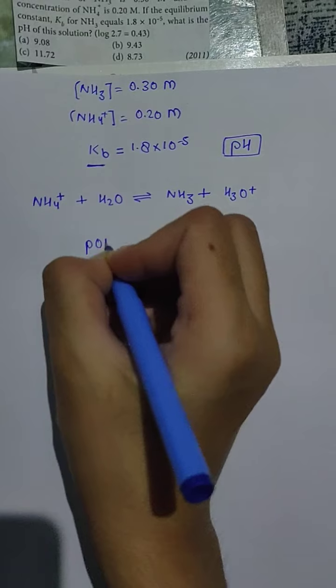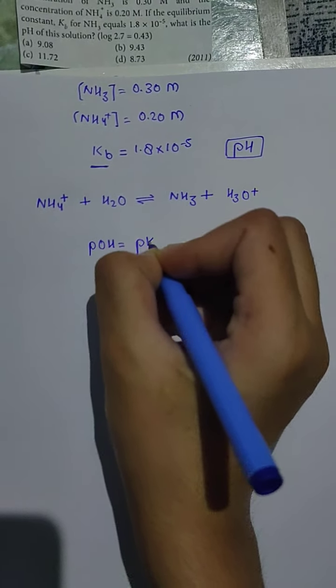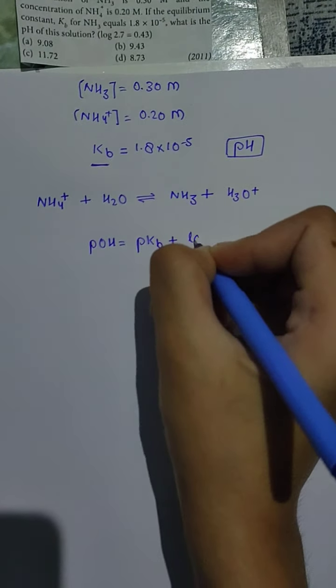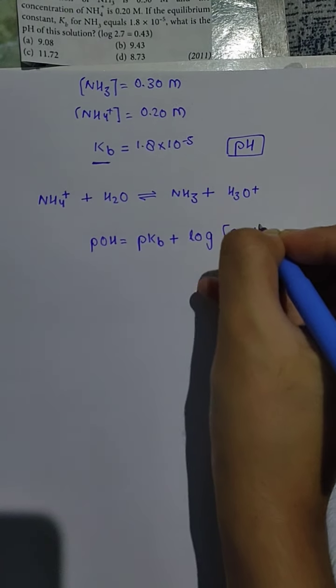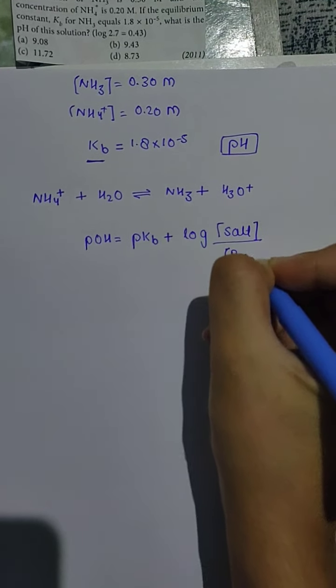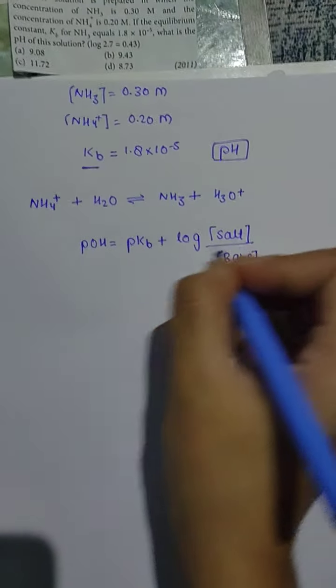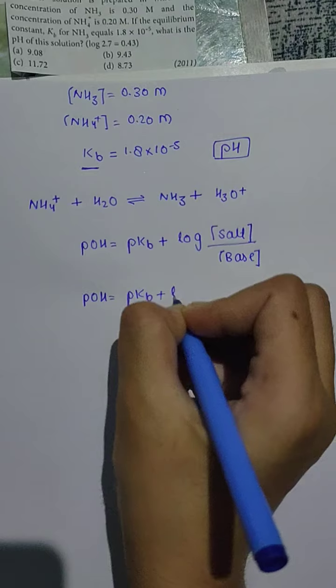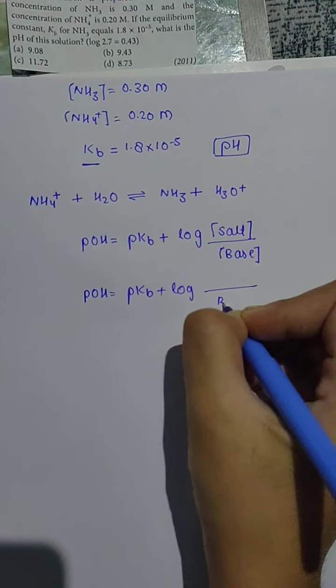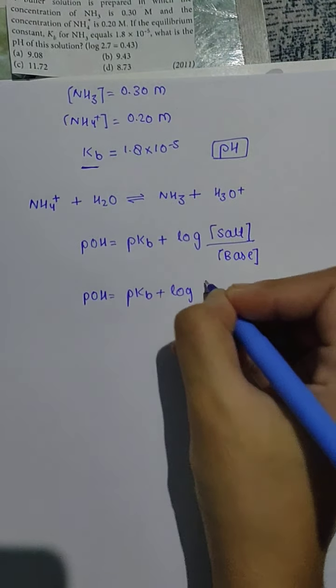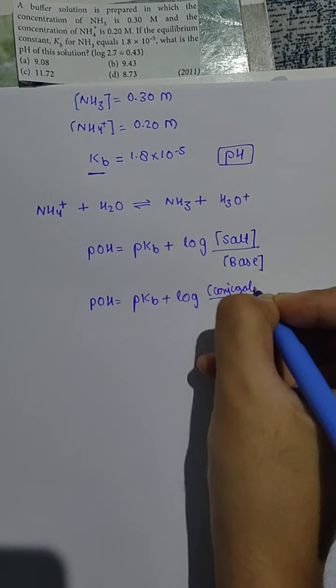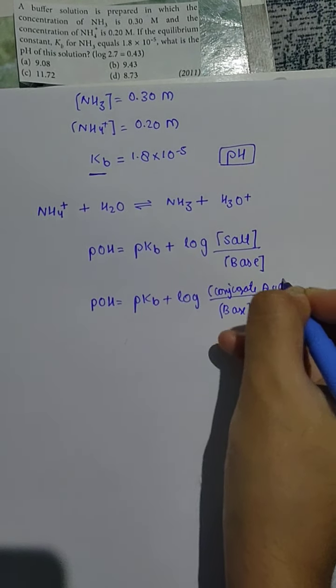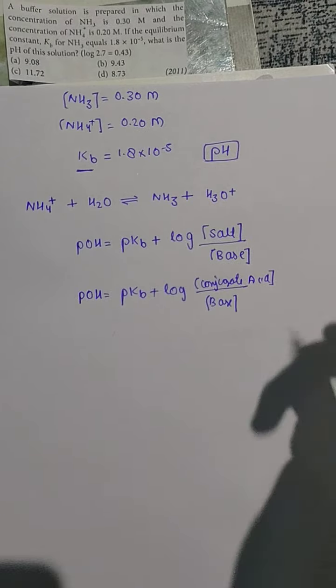We can write that pOH equals pKb plus log of salt upon base. This is the result. We can also write this equation as pOH equals pKb plus log of conjugate acid upon base. The conjugate acid is what's called when the base accepts a proton. The conjugate pair is called acid.